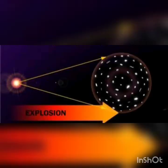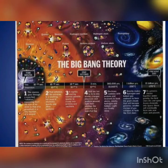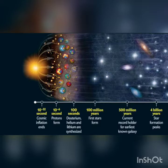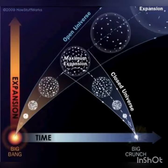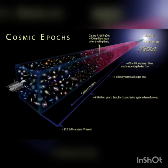The Big Bang theory believes that our universe was formed from a hot and dense point, which is also called Singularity. This Singularity violently exploded — that explosion is called the Big Bang. When our universe was formed, it was so tiny that it could fit inside the palm of our hand. From this infant universe, everything would be created: stars, galaxies, and the building blocks of life.